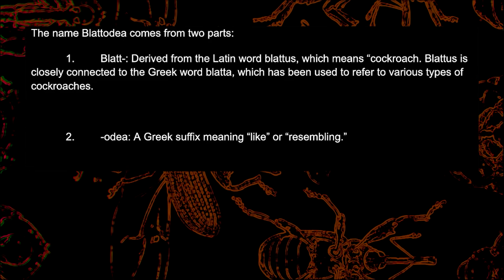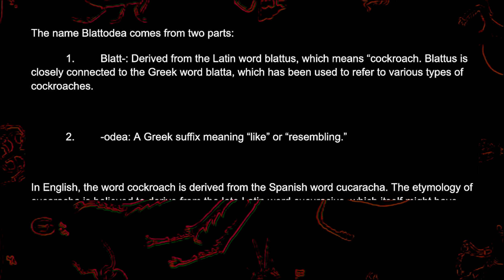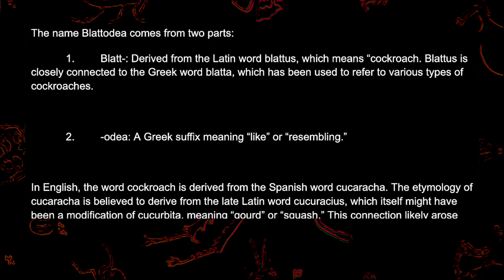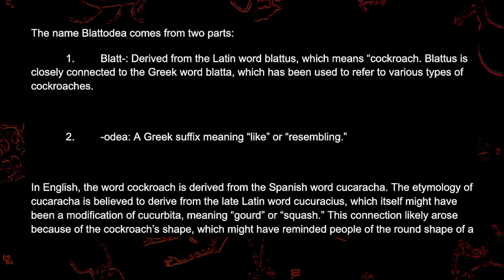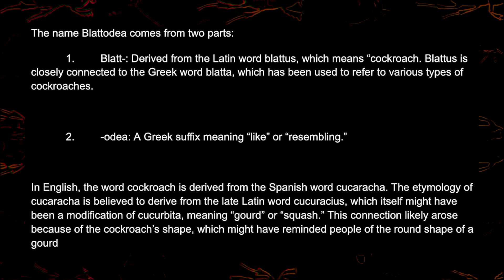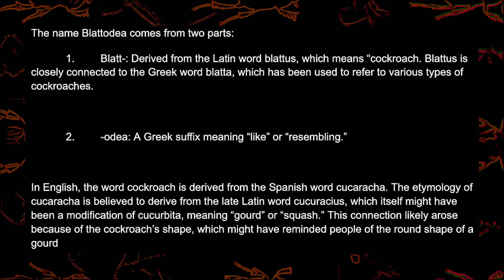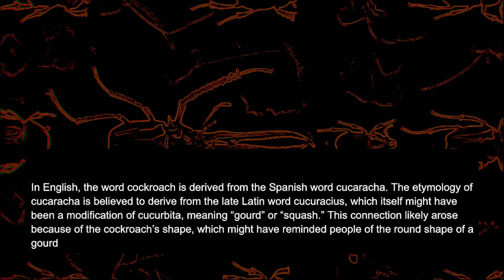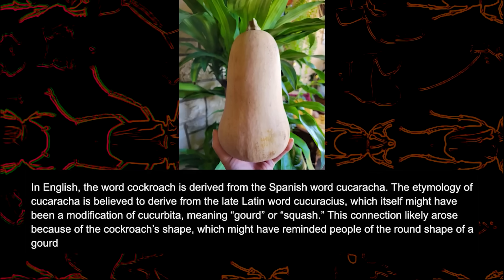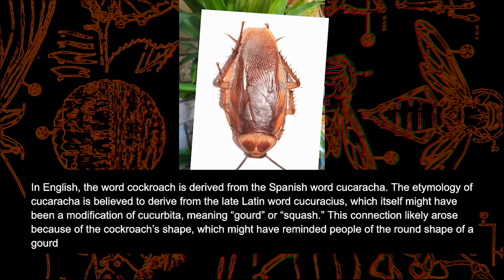In English, cockroach is derived from the Spanish word cucaracha. The etymology of cucaracha is believed to derive from the late Latin word cucarachias, which itself might have been a modification of cucarabida, meaning gourd or squash. This connection likely arose because of the cockroach's shape, which might have reminded people of the round shape of a gourd.